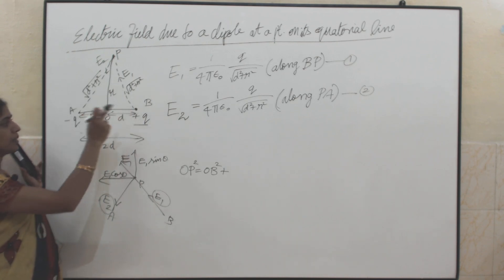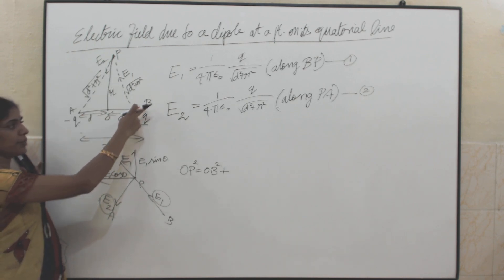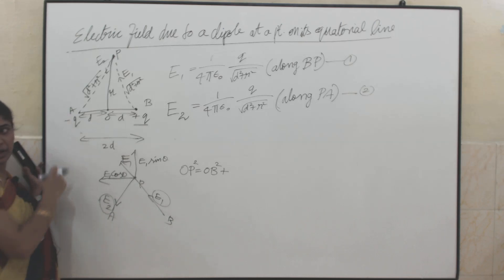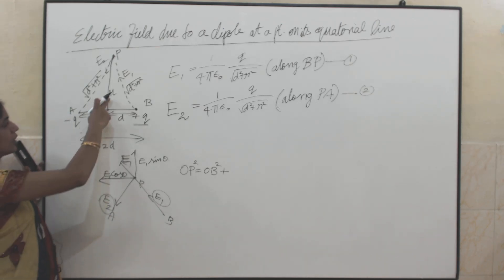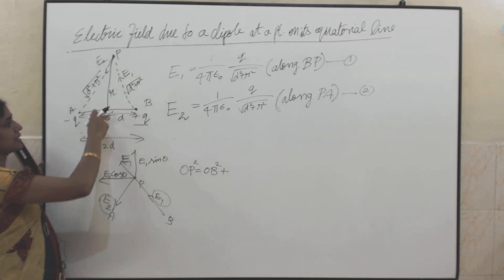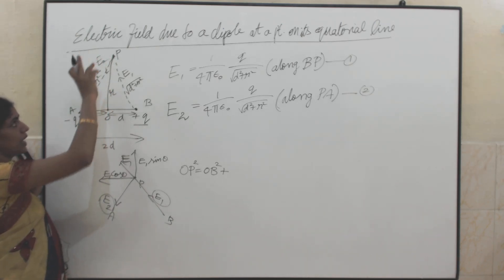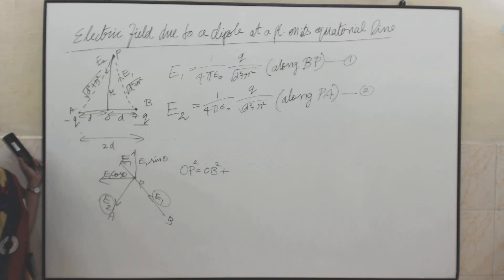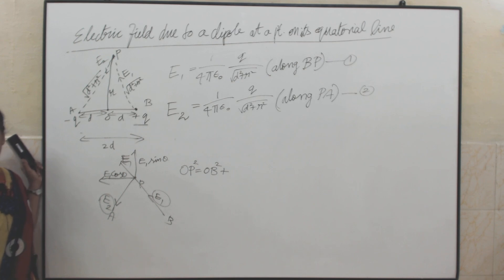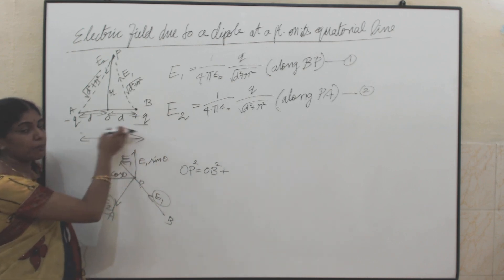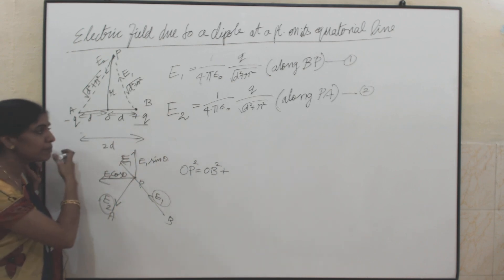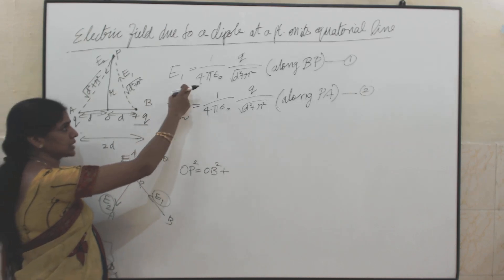AB is the dipole, with plus Q at B and minus Q at A. Let OB and OA be the distance between the centre of the dipole and the points B and A, which is D. First, we will calculate separately how will be the electric field due to the two charges, plus Q and minus Q.